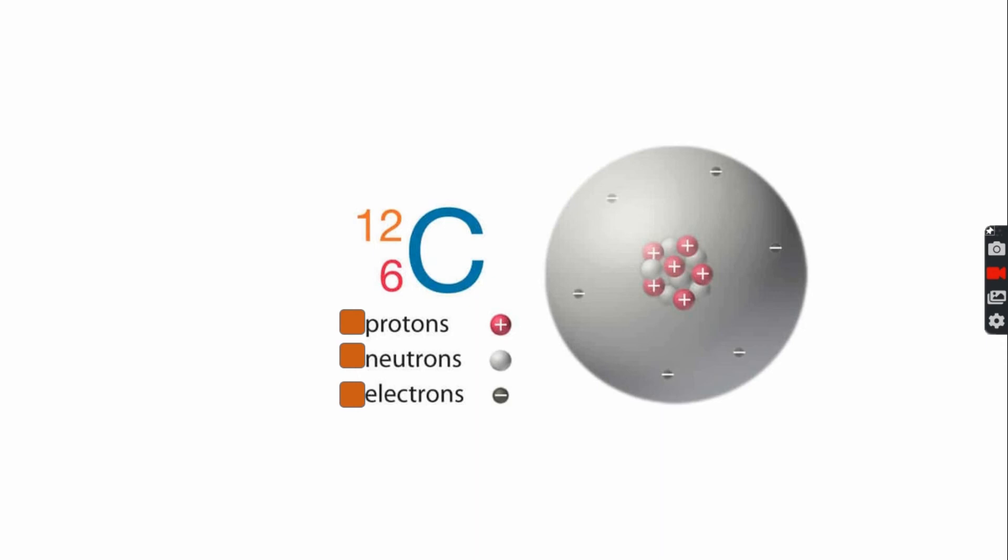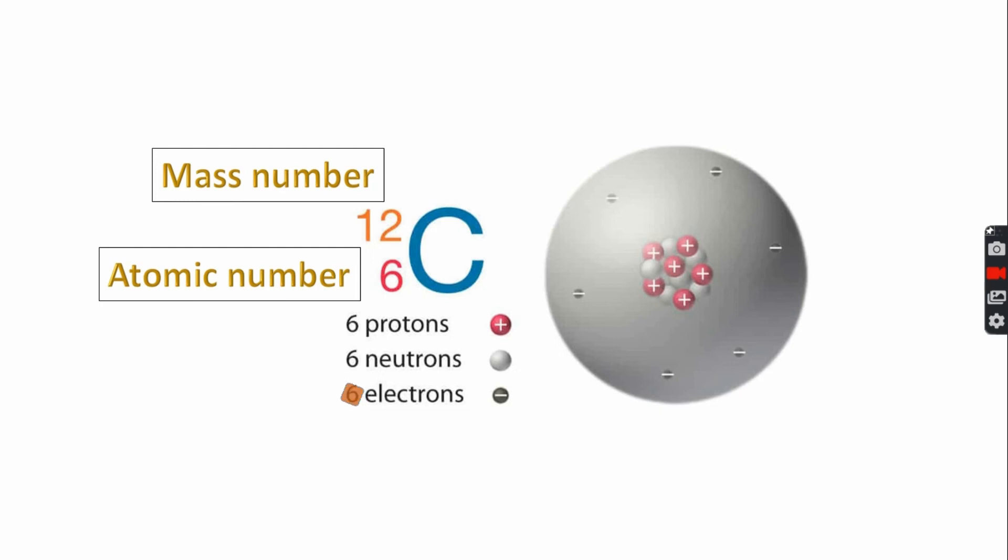The number of protons is 6, as the atomic number shows. The number of neutrons is 6, as mass number minus atomic number is 12 minus 6, and it's equal to 6. And the last, the electron is 6, since it's a neutral ion.